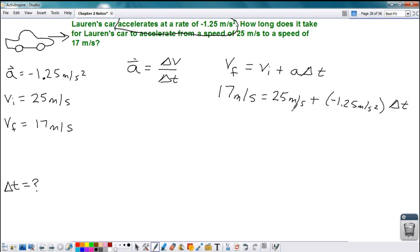Okay, so we need to solve this equation. Well, this has a variable attached to it. The 25 meters per second and this term here are not like terms, so we can't combine them. So the first thing I'm going to do is move the 25 to the left side by subtracting it.